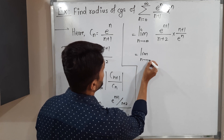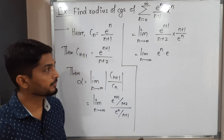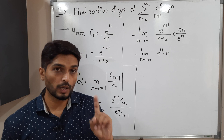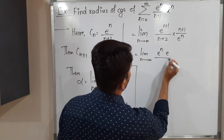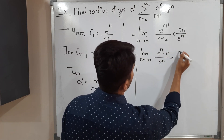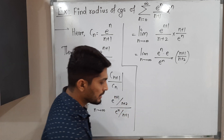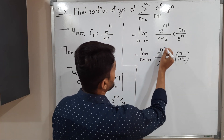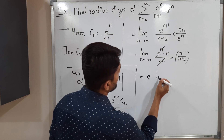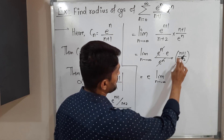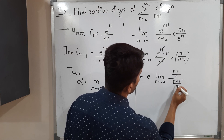This equals the limit as n tends to infinity of e^(n+1) times (n+1) divided by (e^n times (n+2)). Now e^(n+1) = e^n · e, so e^n and e^n cancel each other. Since e is a constant independent of n, it comes outside the limit. Then I divide numerator and denominator by n to evaluate the remaining limit.